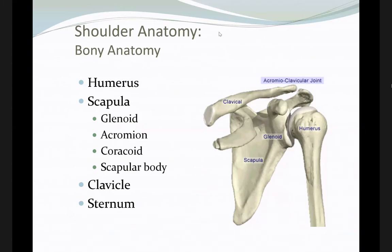The humerus head and the glenoid, which is part of the scapula, have multiple joint attachments — the glenoid, the acromion, and the coracoid — all helping to maintain shoulder stability while allowing significant motion.